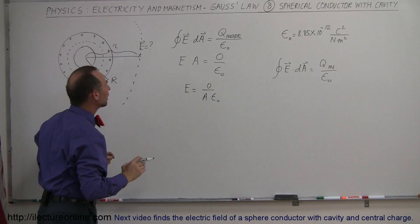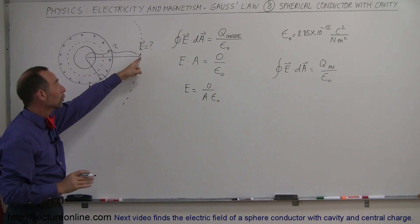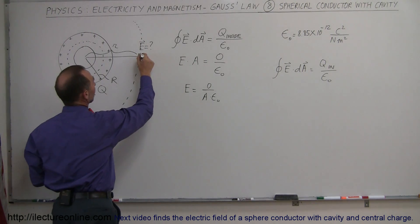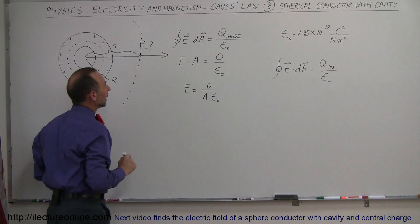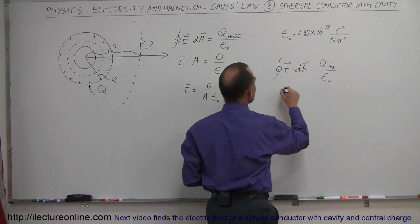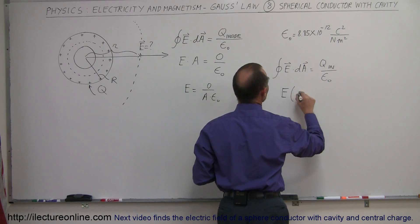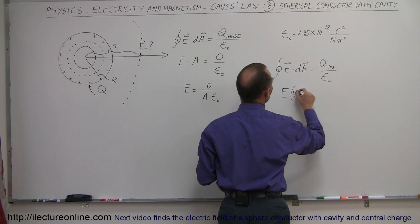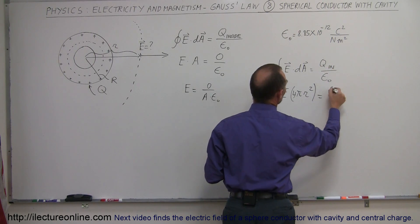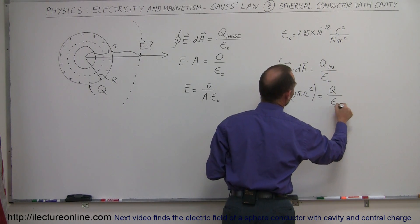The edge of the Gaussian surface is where we want to know the strength of the electric field. So we're looking for the electric field over here now. In that case, we'll get E times the area, which will be 4 pi R squared, is equal to the Q inside, which is Q divided by epsilon naught.